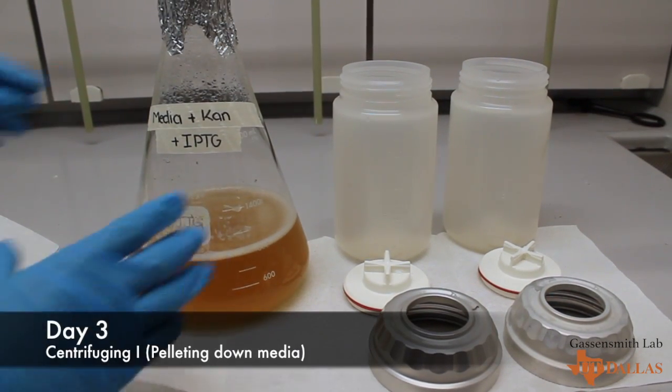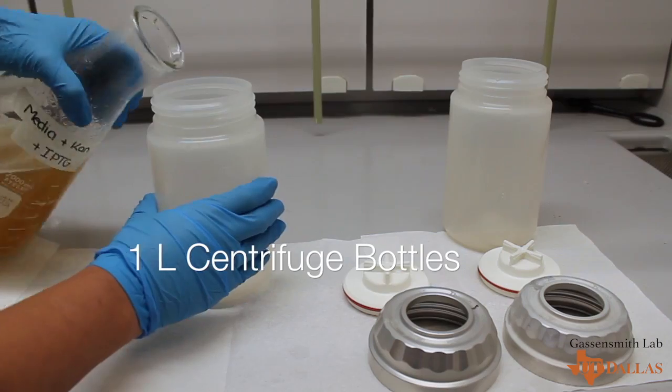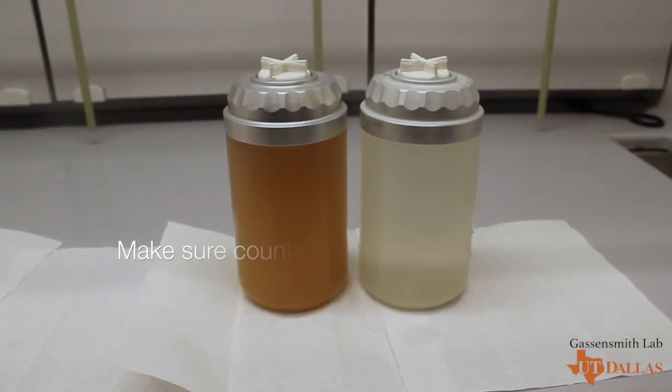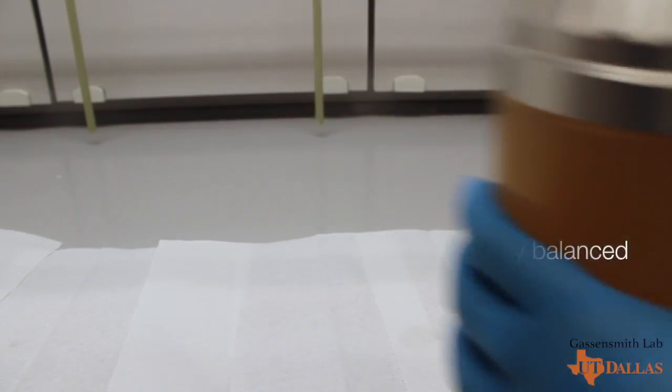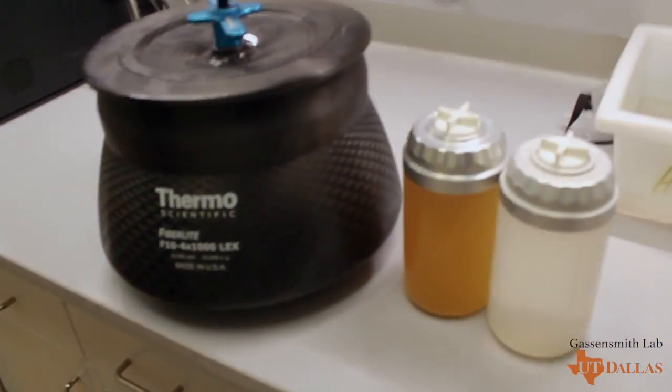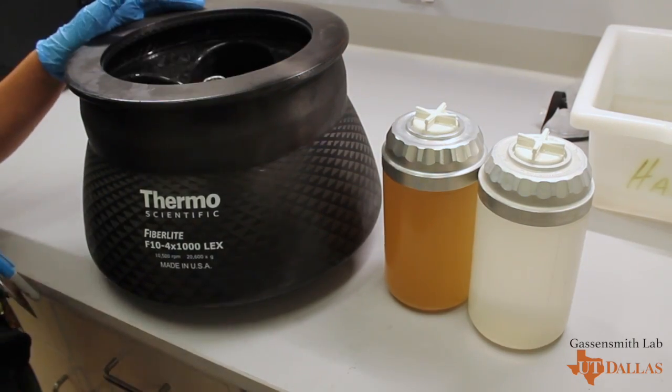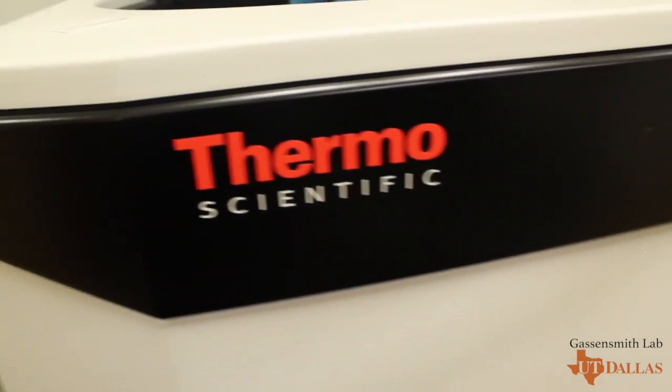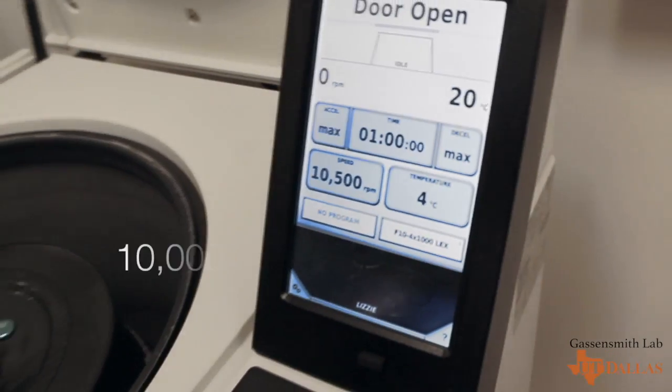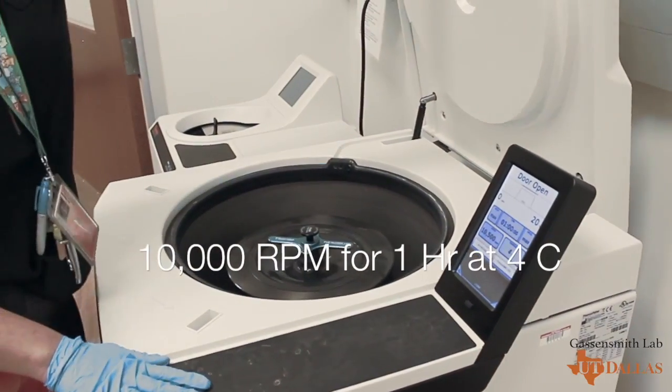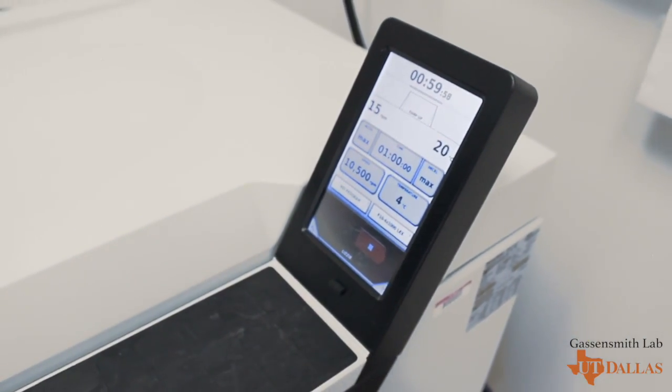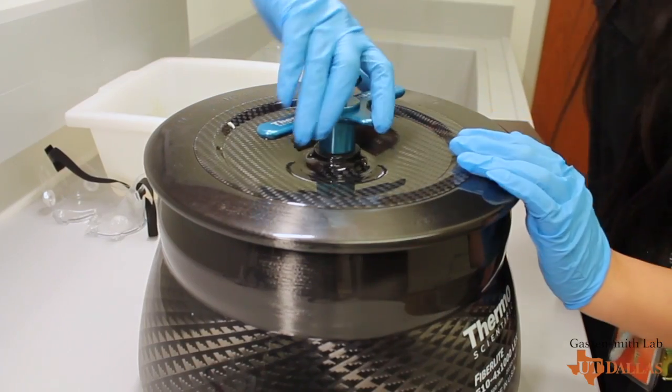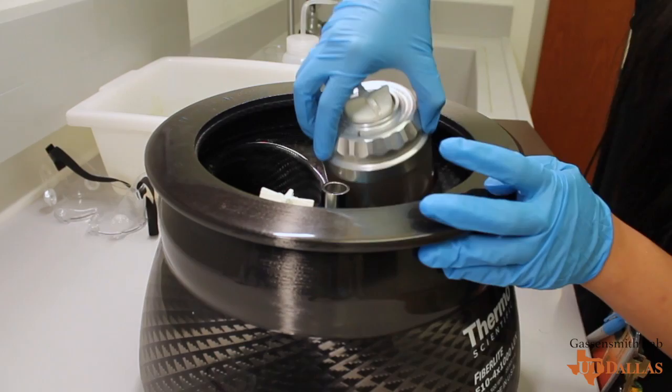The next day, we start by pouring our media into 1-liter centrifuge bottles. Make sure the bottles are of equal mass. Place them carefully into the appropriate rotor. In our case, we use the FiberLite F10 4X1000 LEX rotor in the Lynx 4000 centrifuge by Thermo Scientific. Centrifuge for 1 hour at 10,000 RPM and 4 degrees Celsius. Once the centrifuge is complete, take them out carefully and you should see a pasty pellet at the bottom of the bottle.